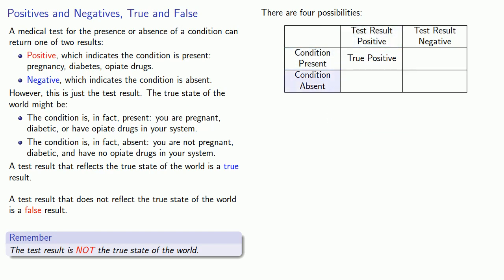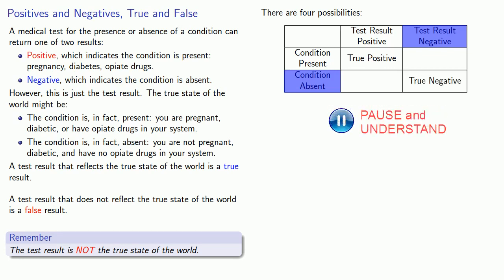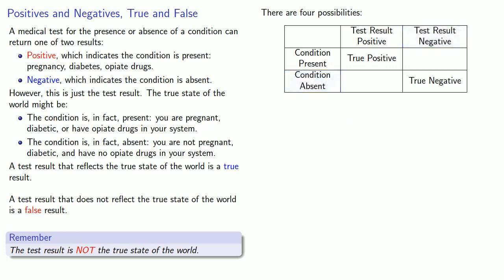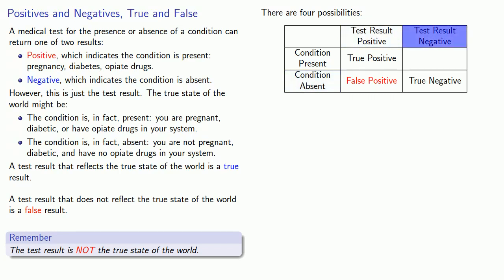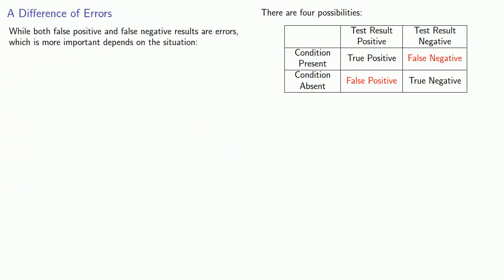Likewise, if the condition is absent and the test result is negative, the test result is a true negative result. On the other hand, if the condition is absent and the test result is positive, then the test has returned a false positive result. And a negative test result when the condition is present is a false negative result. While both false positive and false negative results are errors, which is more important depends on the situation.